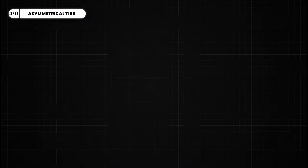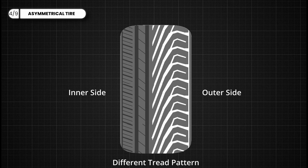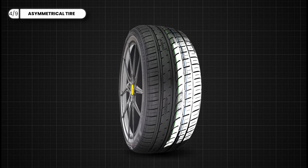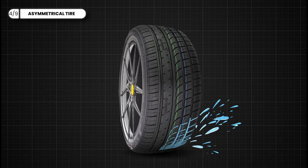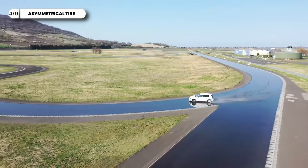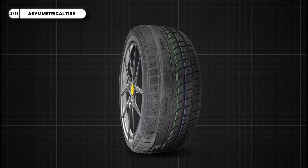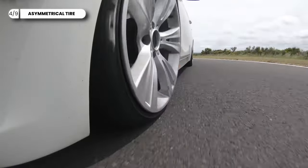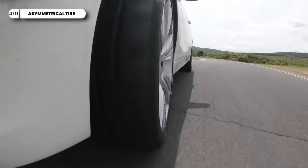Asymmetrical tires feature different tread patterns on the inner and outer halves of the tire, each optimized for specific driving conditions. The inner side typically has deeper grooves for water evacuation and enhanced traction in wet conditions, reducing the risk of skidding or hydroplaning. The outer side may feature larger tread blocks for improved dry weather performance and cornering grip, allowing the car to effectively accelerate without slipping.